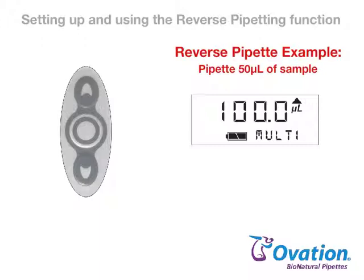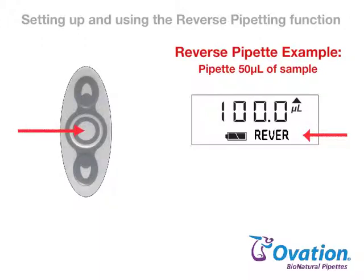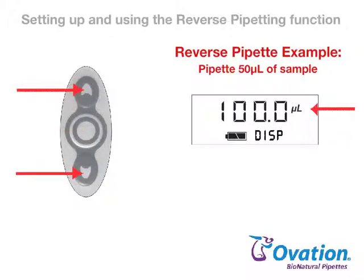First, press and release the round button until reverse appears on the display. Then press the up or down arrow and the current dispense volume will be displayed. Press the up or down arrow again to change this to the desired setting.